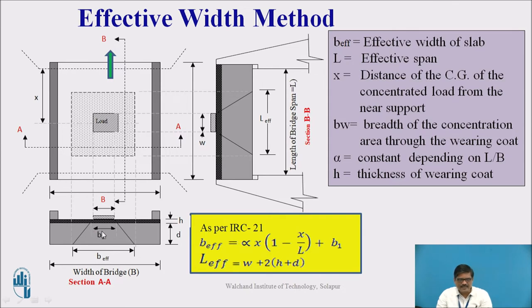And this B1 is the breadth of the concentrated area through the wearing coat. In this particular picture, B1 is the dispersed dimension after allowing the dispersion through the wearing coat.